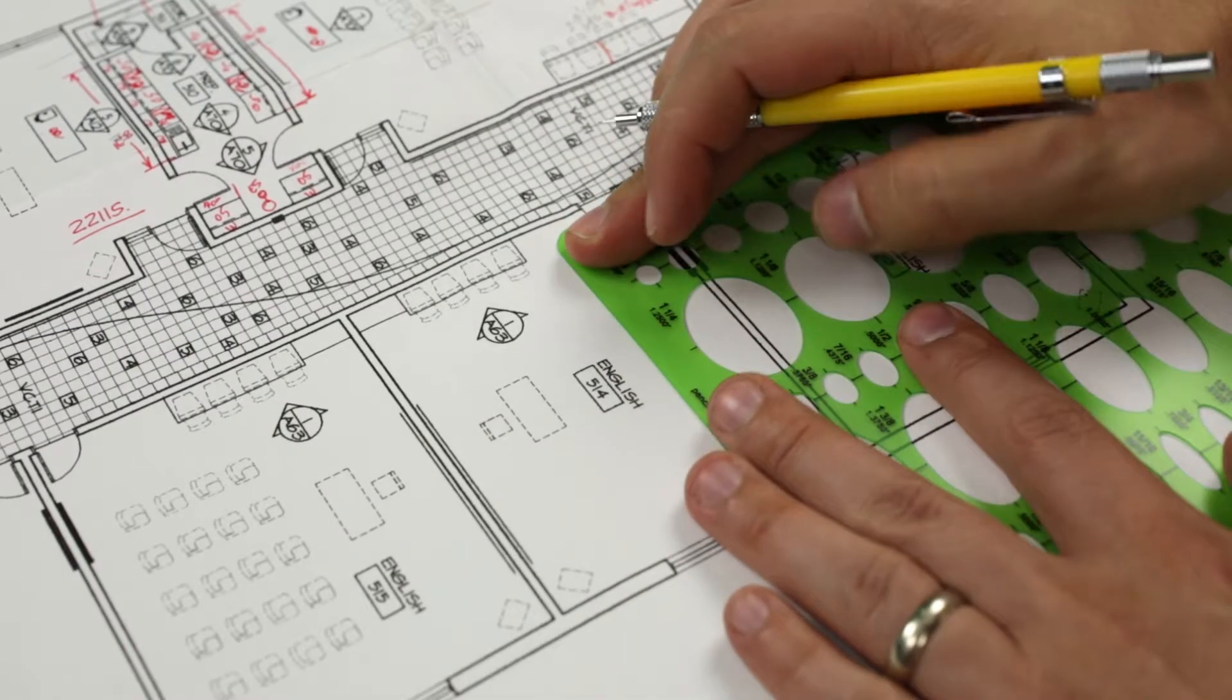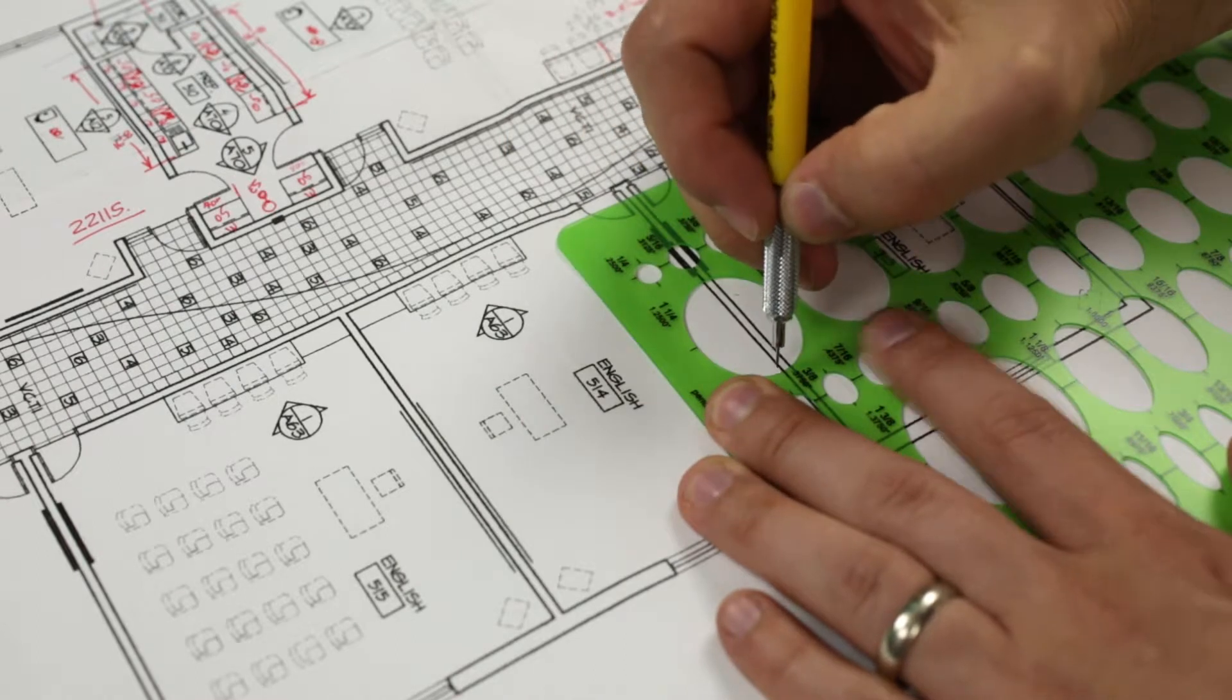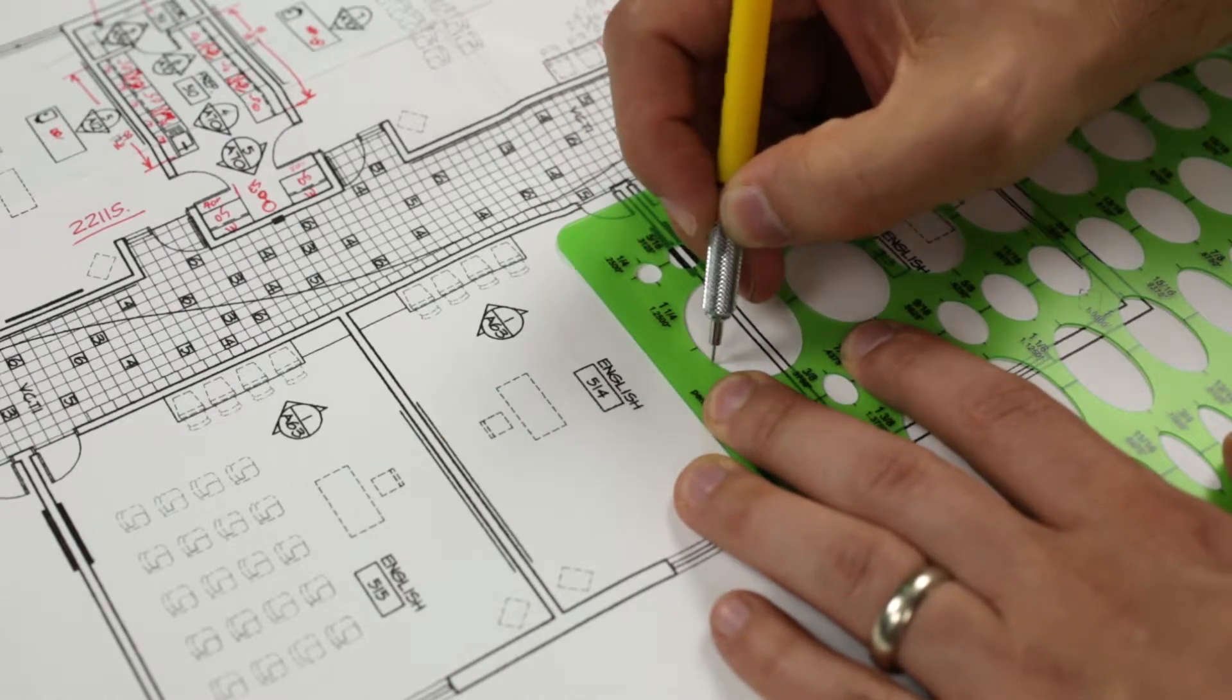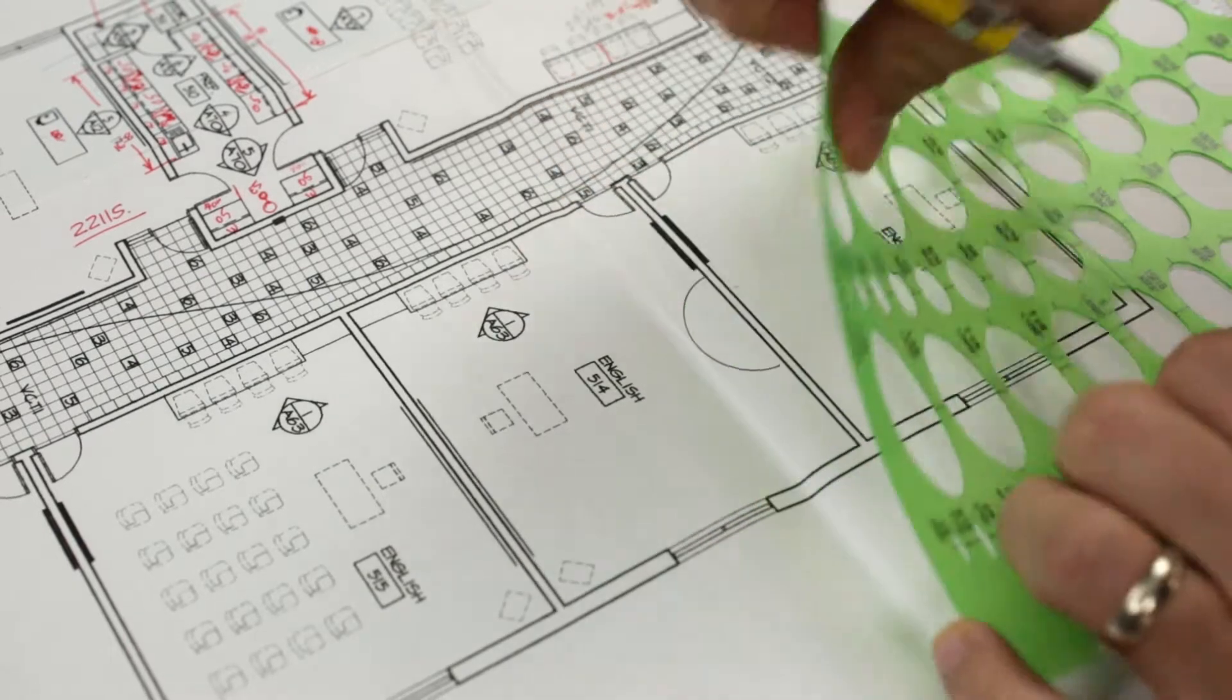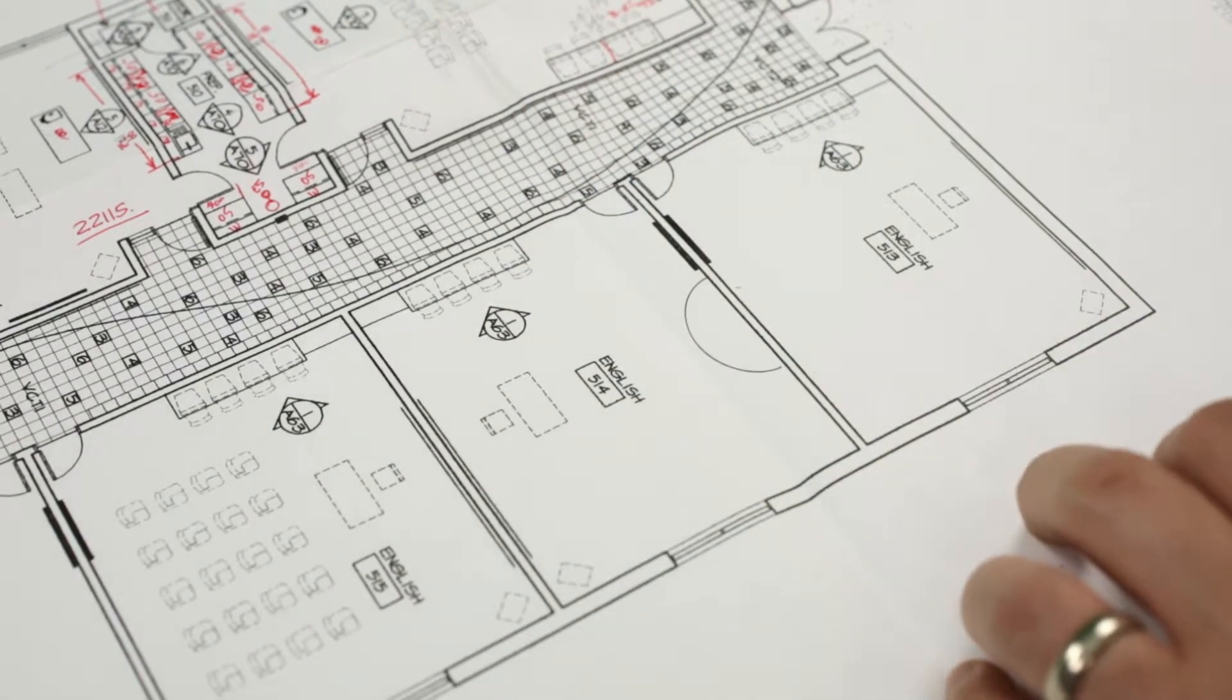A few tips on using your template. Number one: always press your template firmly against your work surface when drawing. When removing your template, pick it straight up off the surface so that you don't smudge the lines.